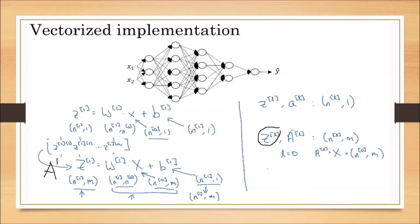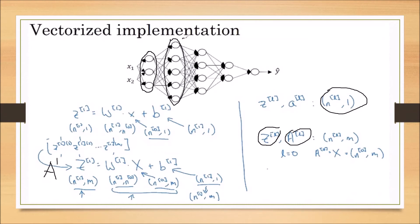The common notation for ZL and AL: for a single training sample the matrix size is nL×1 — for example, if we have 3 activation units, Z is a 3×1 matrix. Z2 for a layer with 5 units is a 5×1 matrix. In general, for the Lth layer with a single training sample, ZL and AL are nL×1.